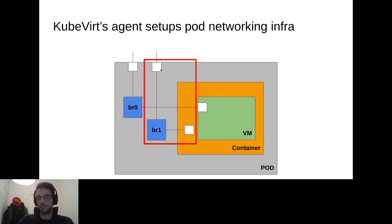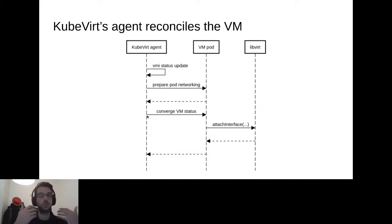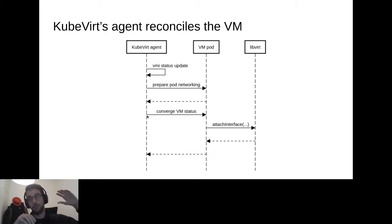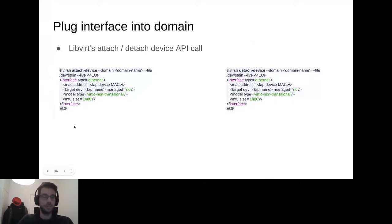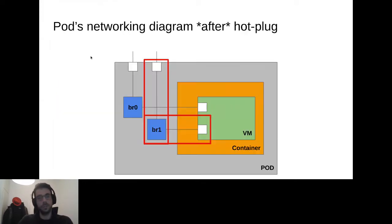The agent also converges the VM status to reflect the spec changes, using libvirt's golang bindings to call attach interface and detach device commands. Once executed, the interface is hot plugged into the VM, resulting in an emulated network device interconnected via a bridge to the pod interface whose networking was already configured via CNI.